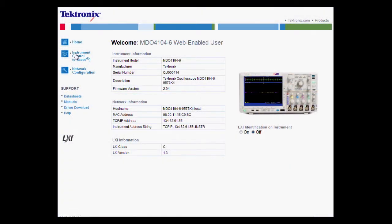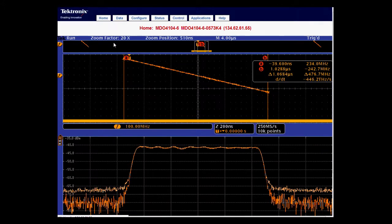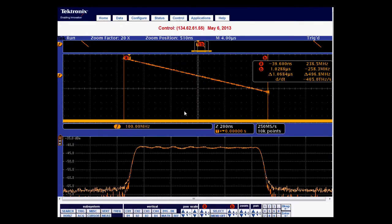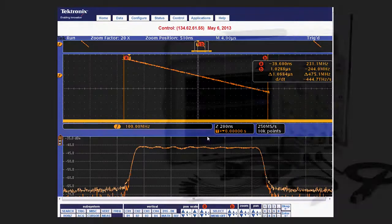With eScope, you can access and control any internet-connected MDO 4000 series oscilloscope from a web browser on your computer or mobile device. The MDO eScope is a web server, and no additional software is needed to be installed on the computer or mobile device.